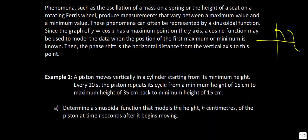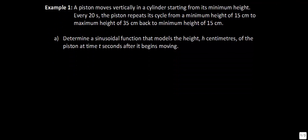We're going to tackle two different examples in this lesson. Example one: a piston moves vertically in a cylinder starting from its minimum height. Every 20 seconds the piston repeats its cycle from a minimum height of 15 centimeters to a maximum height of 35 centimeters and back to a minimum of 15. So let's draw a picture to show what's going on.